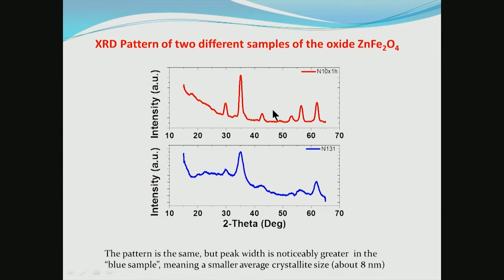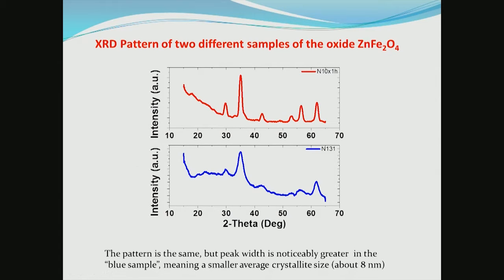These are XRD patterns of two different samples of ZnFe2O4 (zinc ferrite). The upper pattern is from a relatively large crystallite material, and the lower is from material with a grain size as small as about 8 nanometers. You can readily see that the peak width is smaller for larger grains and larger for smaller crystallites. So there is a direct dependence of peak width on the average size of the crystals comprising the sample.